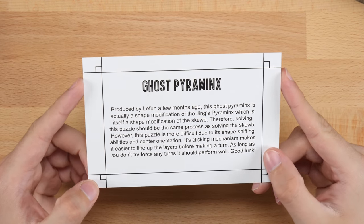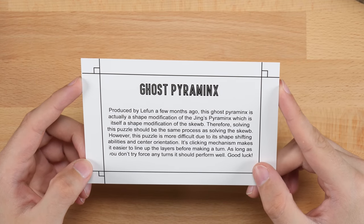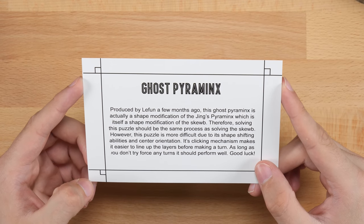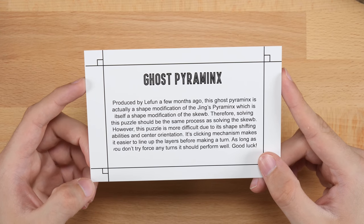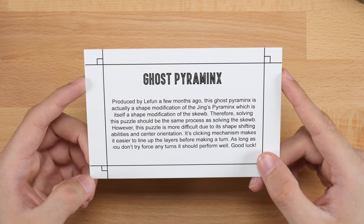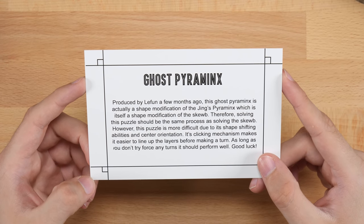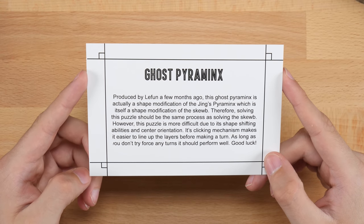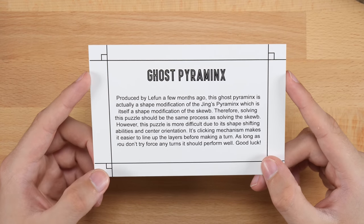Next one in here is the Ghost Pyraminx. So this says, produced by Lee Foon a few months ago, this Ghost Pyraminx is actually a shape modification of the Jinx Pyraminx, which is itself a shape modification of the Scube. Therefore solving this puzzle should be the same process as solving the Scube. However, this puzzle is more difficult due to its shape shifting abilities and center orientation. It's clicking mechanism makes it easier to line up the layers before making a turn. As long as you don't try to force any turns, it should perform well. Good luck.